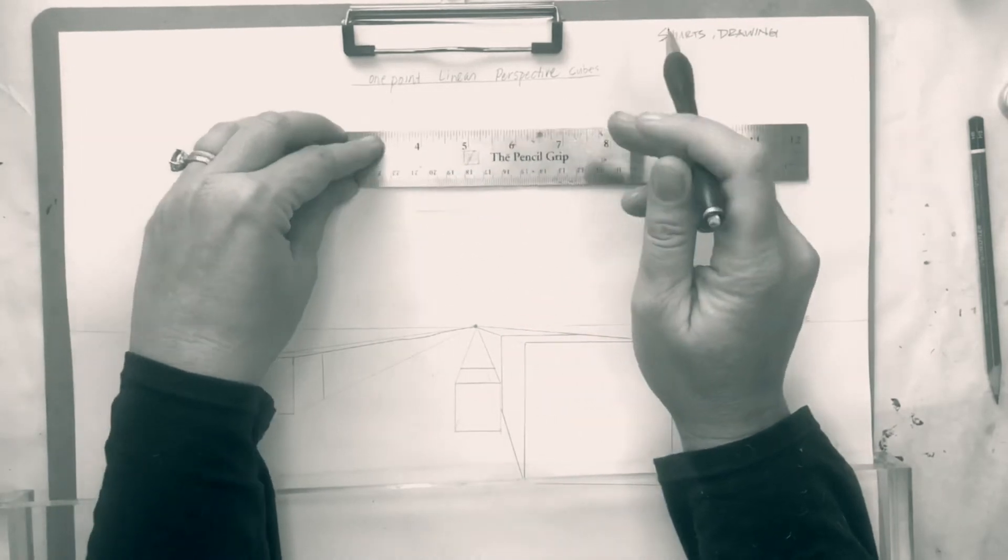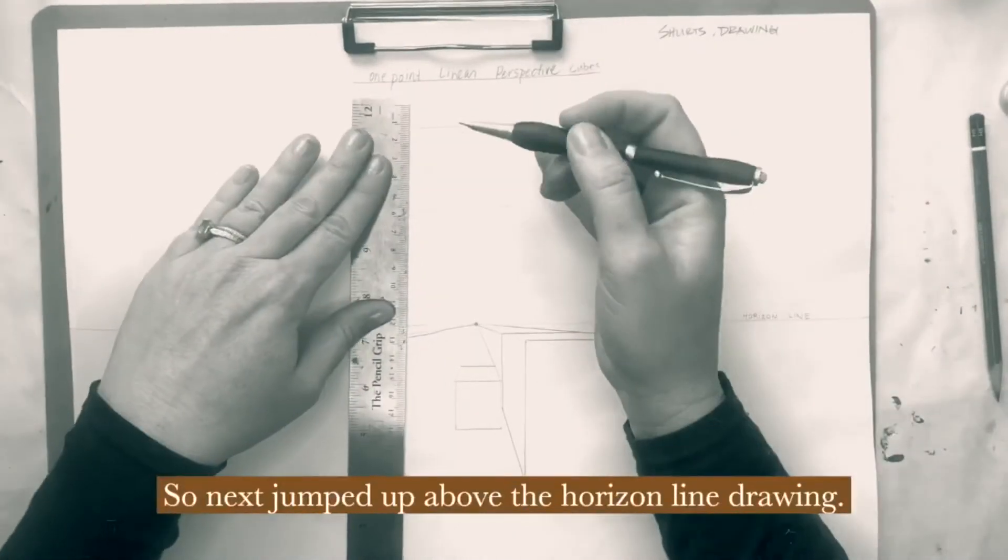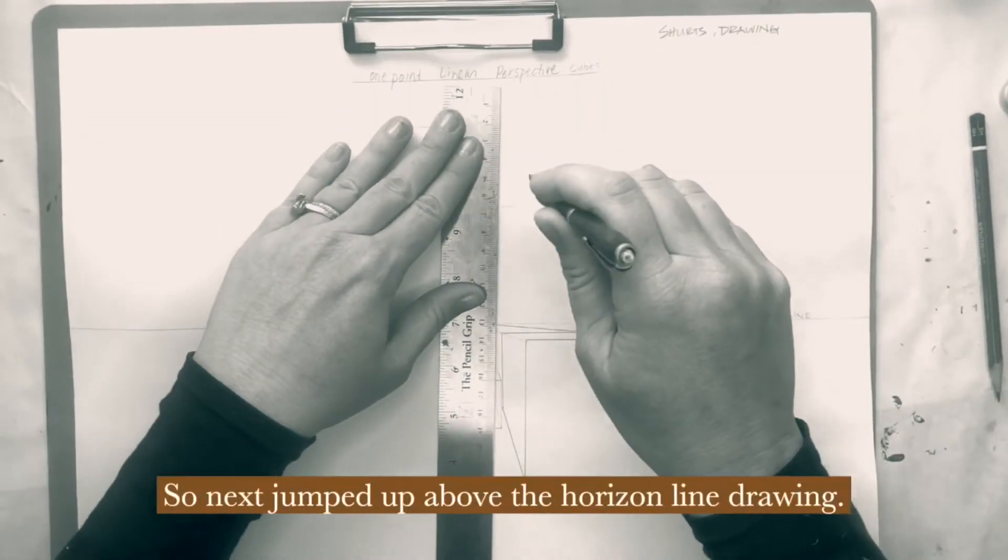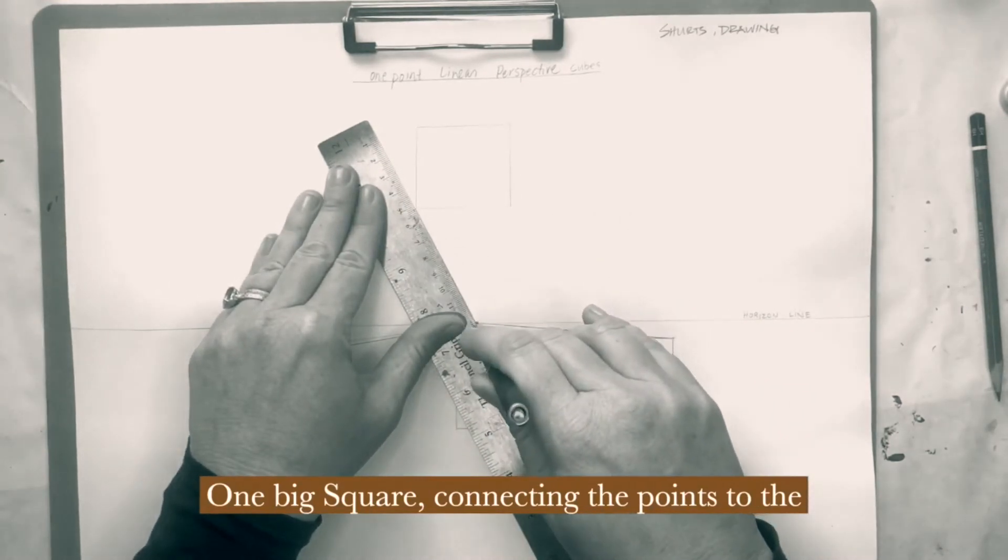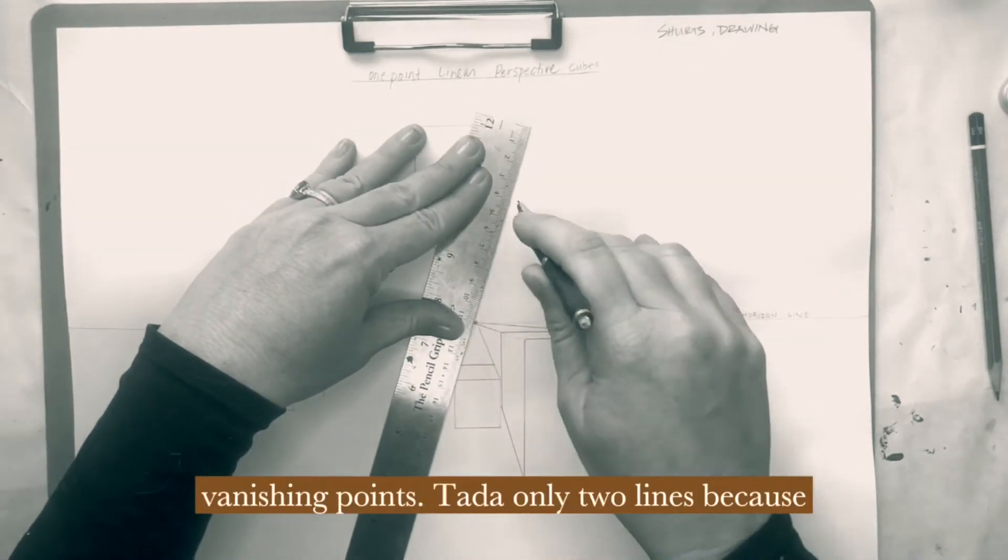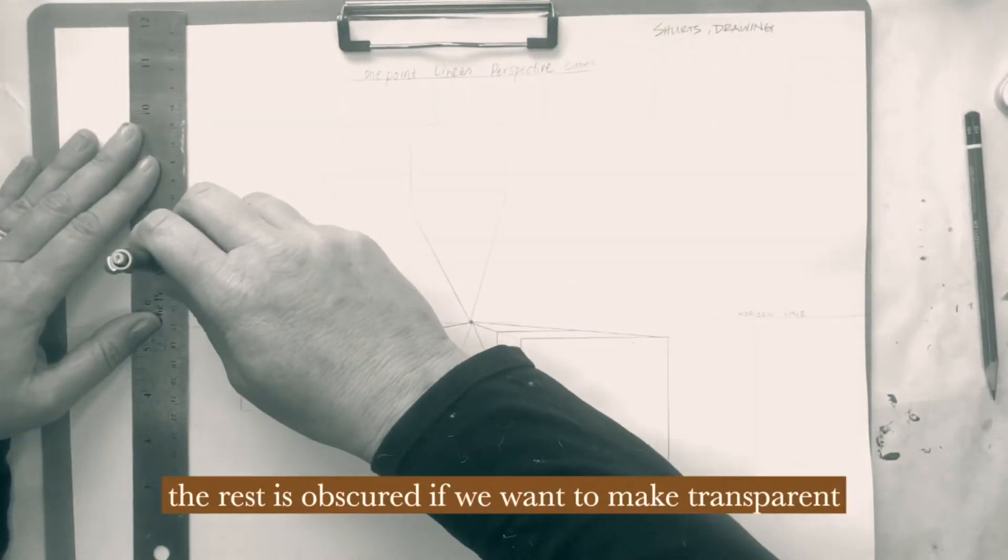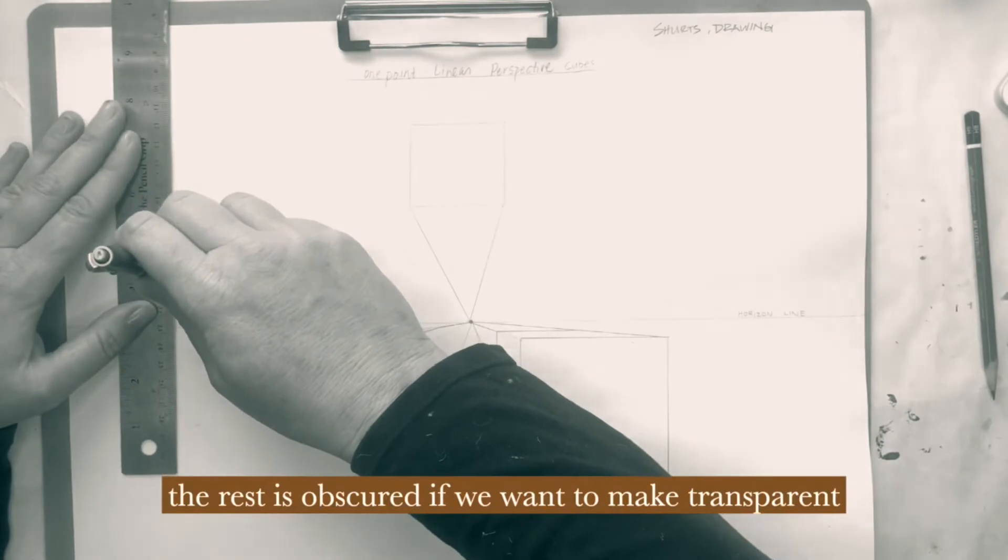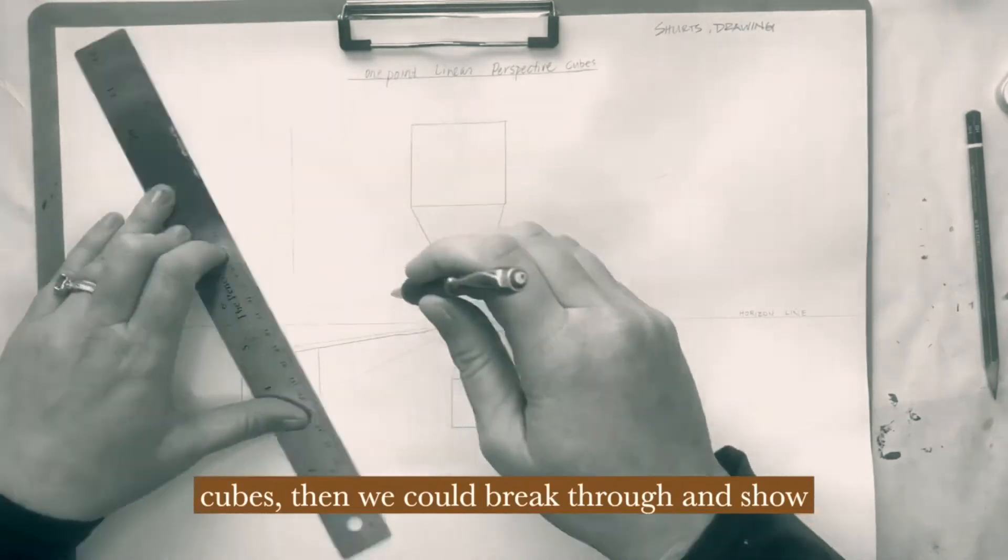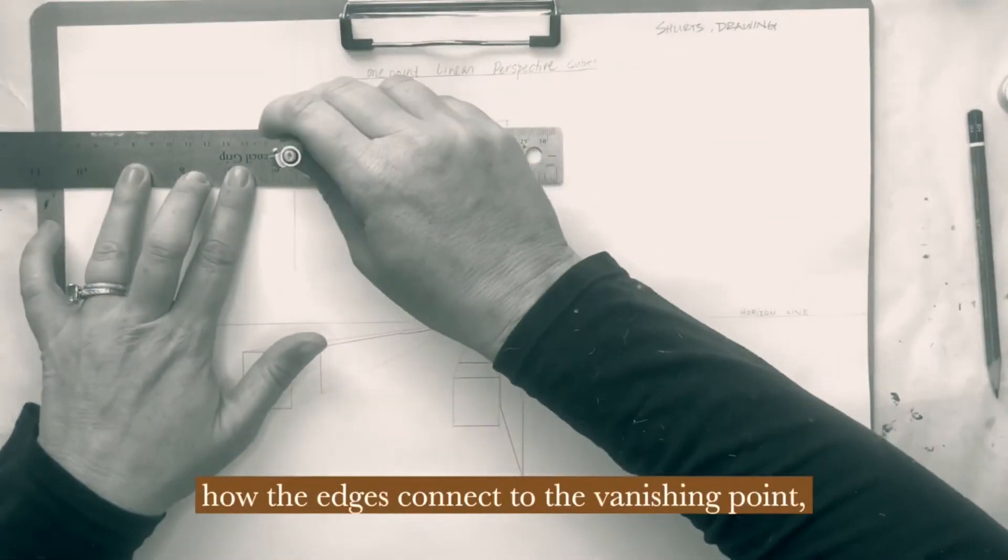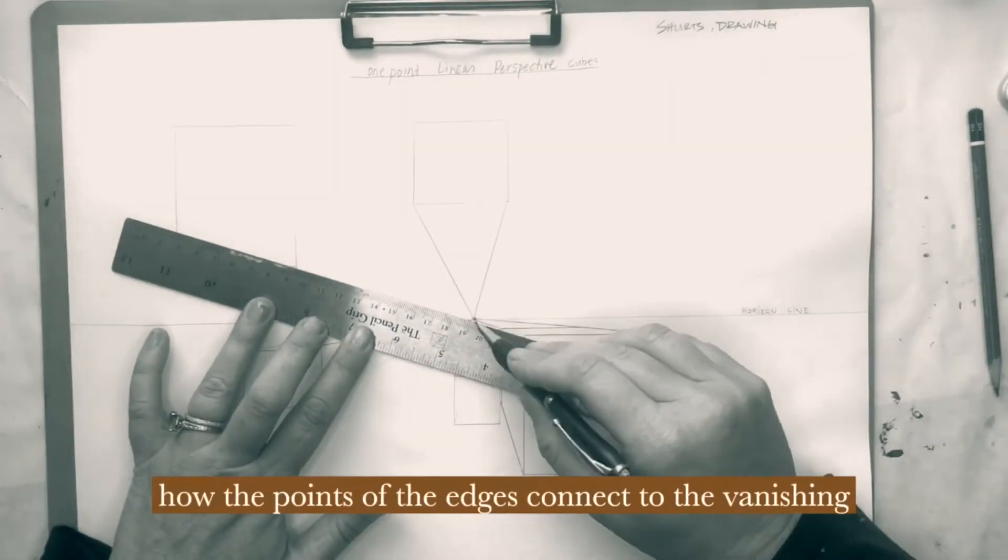So next, jumped up above the horizon line, drawing one big square, connecting the points to the vanishing point. Ta-da! Only two lines because the rest is obscured. If we want to make transparent cubes, then we could break through and show how the edges connect to the vanishing point. How the points of the edges connect to the vanishing point on the horizon line.